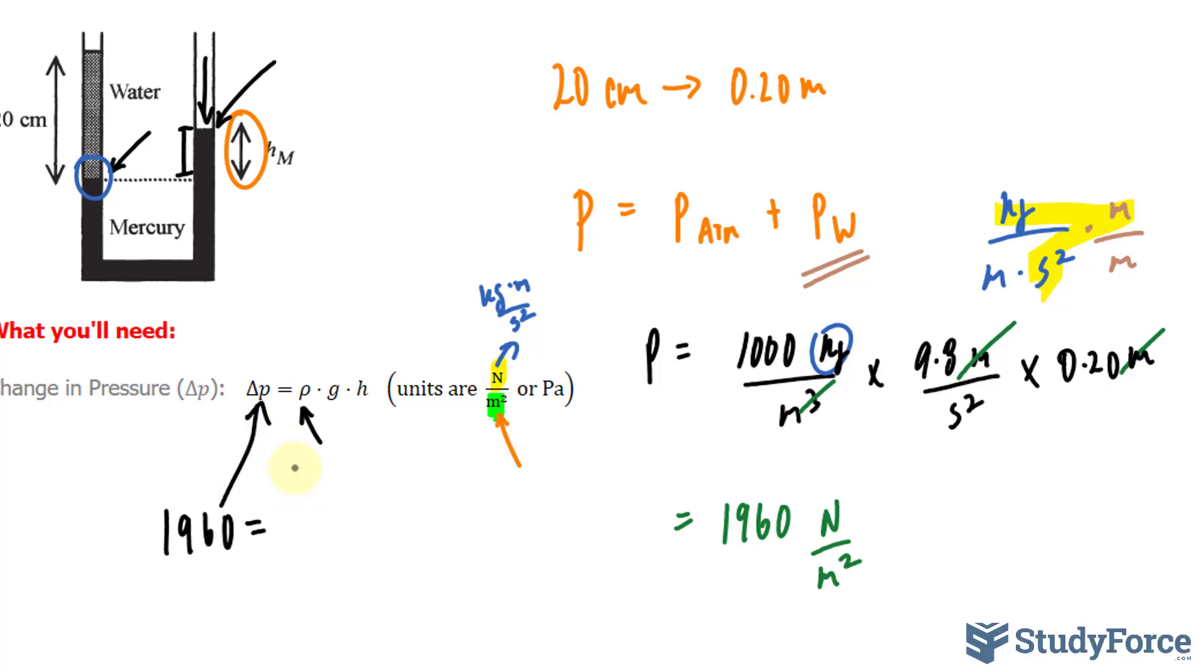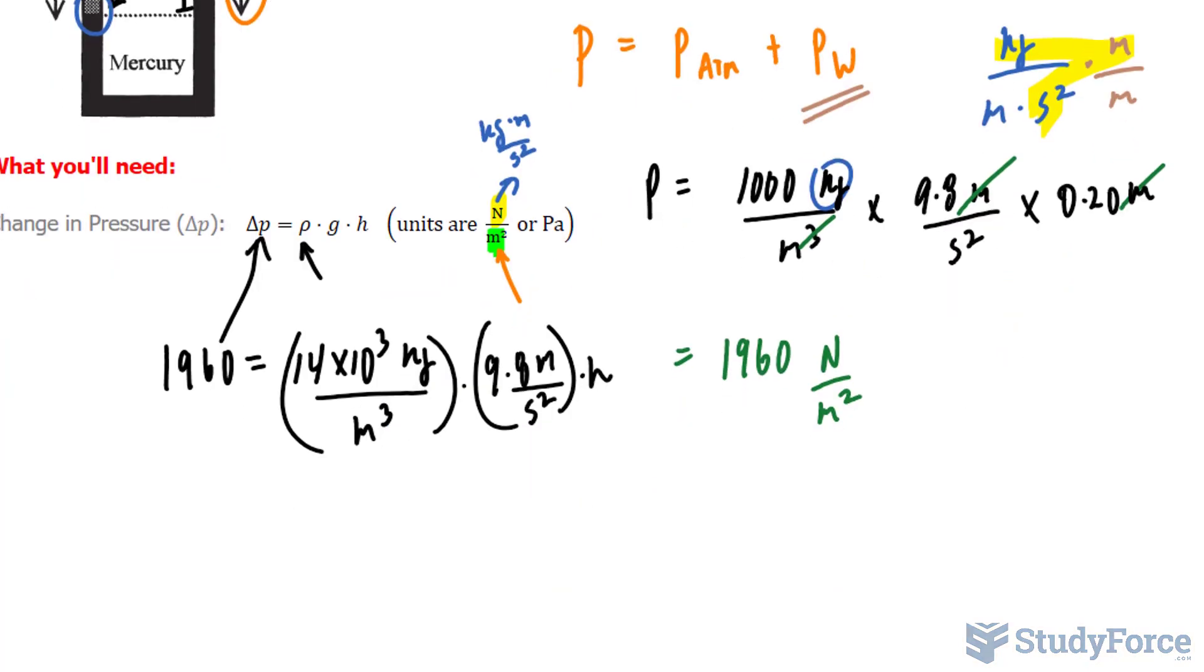the density of Mercury should be given to you in the question, and that value is 14 times 10 to the power of 3 kilograms per meters cubed. Multiply to the acceleration due to gravity, times the height, which is what we're looking for.